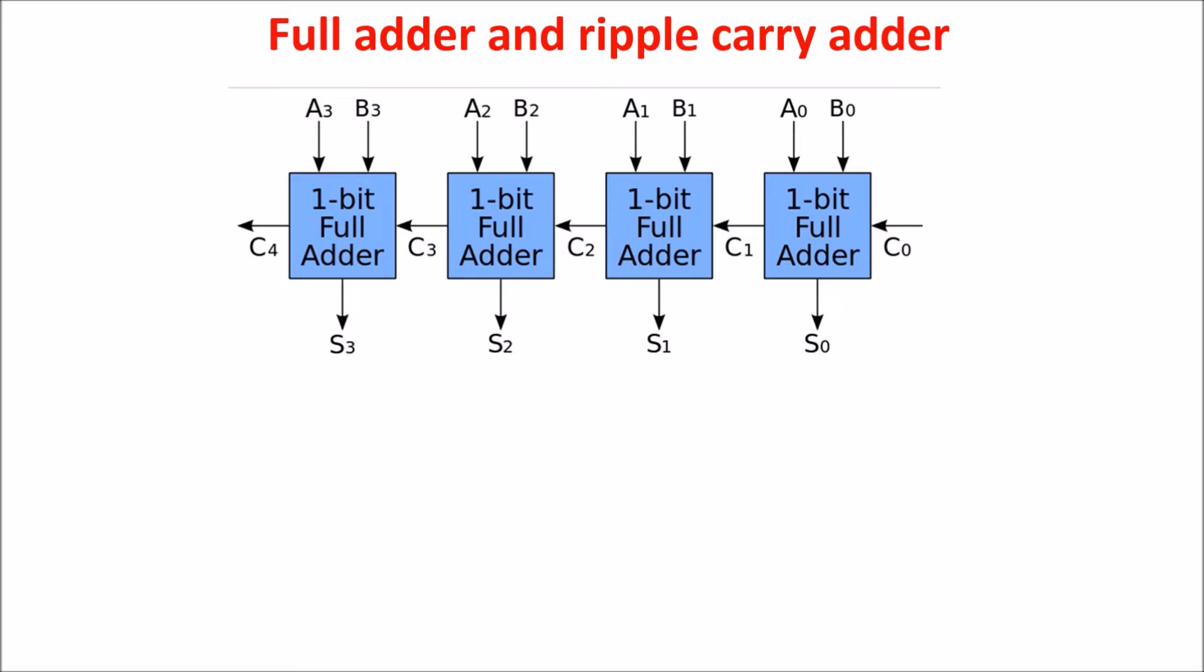The formula of the delay of the ripple carry adder is this, assuming T-Sum is longer than T-Carry. As you see, there is a linear relation with the number of bits, so as the number of bits increases, the delay increases. For example, with 64 bits, the delay can be too much for our needs.